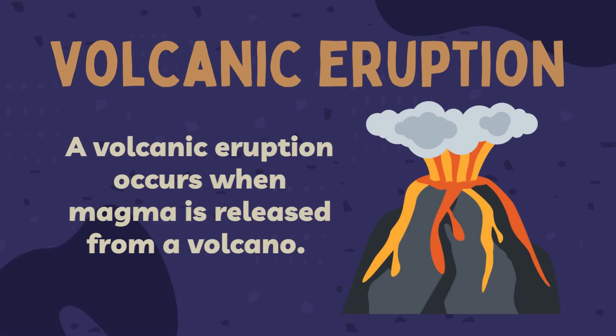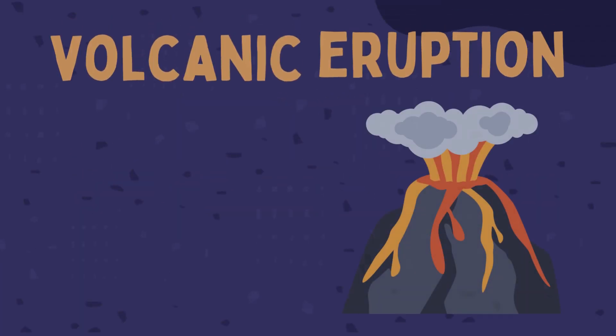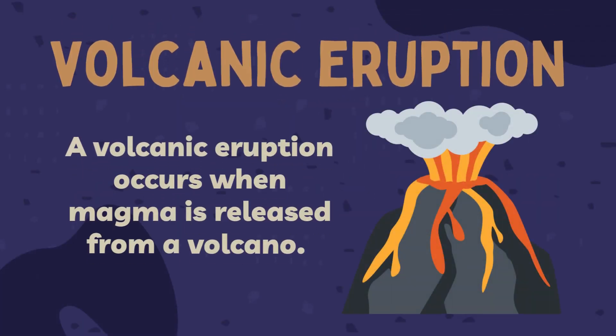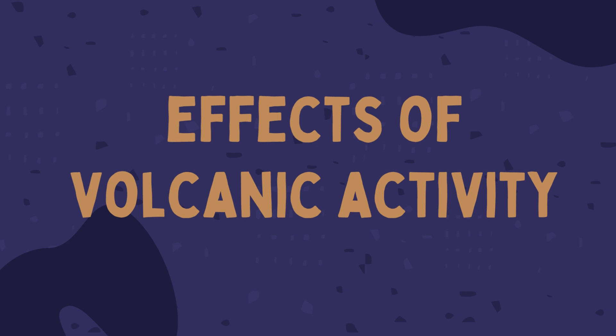Like earthquakes, volcanic eruptions cause changes on Earth's surface. A volcanic eruption occurs when magma is released from a volcano. Volcanic eruptions can be quite calm and effusive or they can be explosive, and can also pose hazards to people and property.